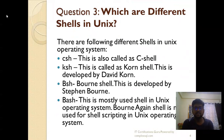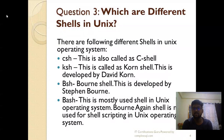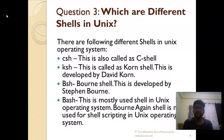What are the different shells in Unix? There are several: csh, which is called the C shell; ksh, which is called the Korn shell, developed by David Korn; and the Bourne shell, which is developed by Stephen Bourne.